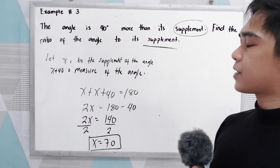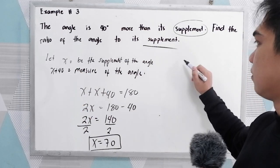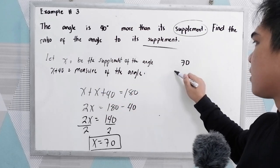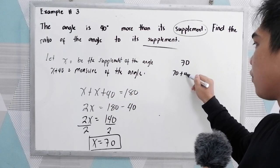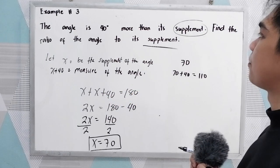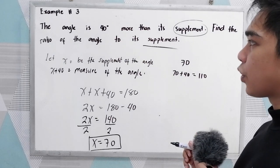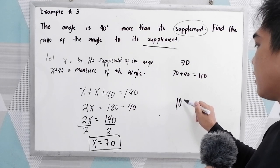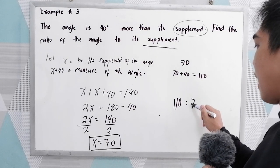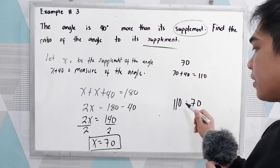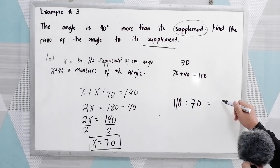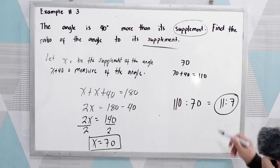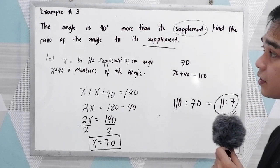So x equals 70, which is the supplement. The measure of the angle is 70 plus 40, that is 110. The ratio of the angle to its supplement is 110 is to 70. This can be reduced to lowest terms: 11 is to 7. So 11 is to 7 is our final answer.